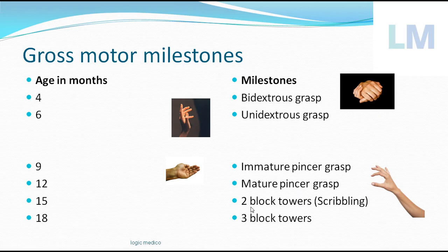At fifteen months, the child is able to build a tower of two blocks; at eighteen months, a tower of three blocks. An easy mnemonic: in the number 15, the digit 5, when flipped, looks like a 2 — so tower of two blocks. In the number 18, if you cut the 8 in half, you can see a 3 — so tower of three blocks.